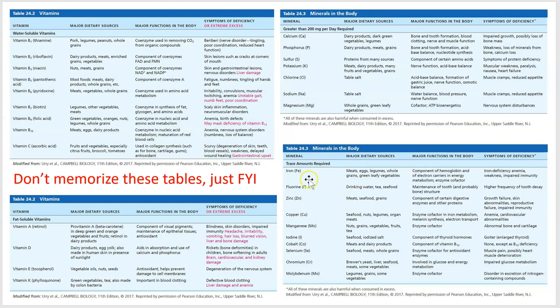Just because minerals are classified as 'trace' doesn't mean they're not important. Iron — if you took all the iron out of your body, you'd be dead. An iron shortage makes you anemic. You can die from a lack of iodine or zinc. You just need tiny, tiny amounts of these things. All right, that's video one. The next video will start on metabolism.